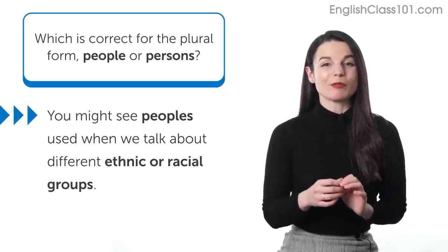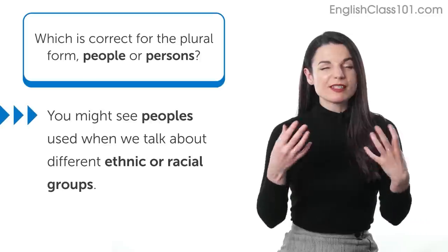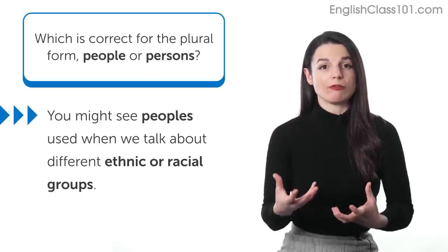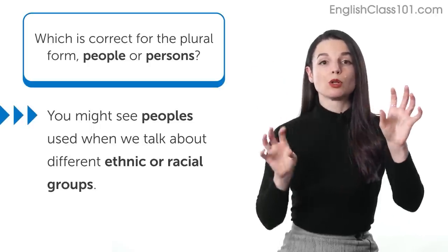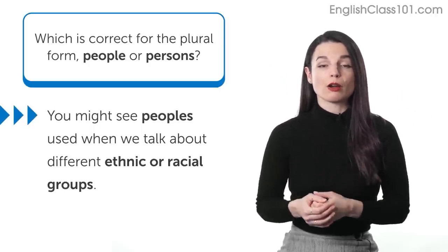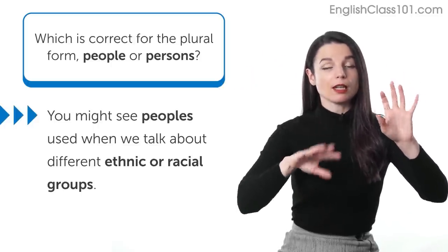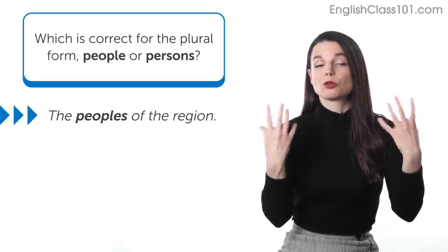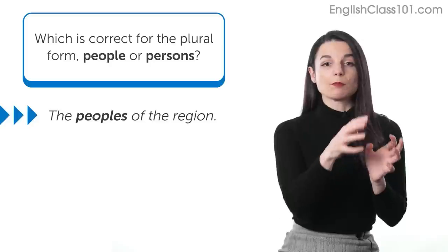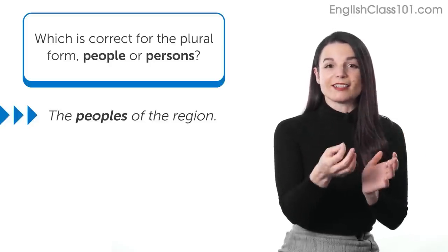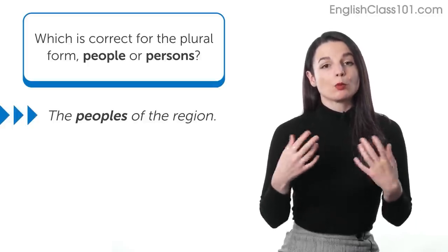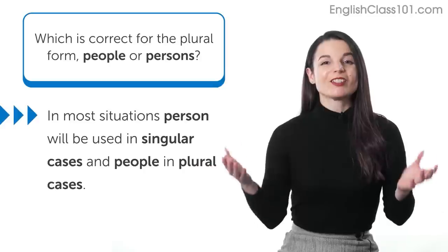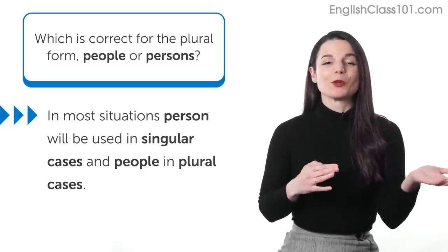Let's also talk about 'peoples' — people with an S. This use is typically specific to talking about different ethnic or racial groups. For example, if discussing multiple native tribes in one region, you might say 'the peoples of the region,' referring to three different tribal or ethnic groups. This is a very specific and rare use. In most situations, follow the rule: singular 'one person,' or multiple 'two or more people.' I hope this clarifies the uses of these words.